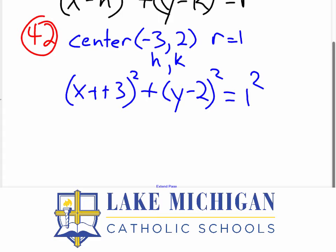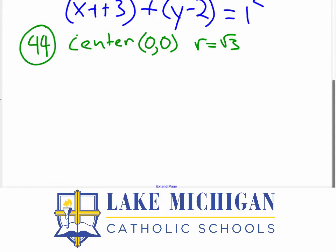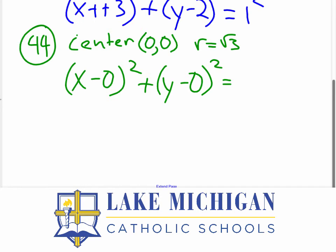And that's pretty much it. Now 44 is very similar to this. For 44, we're going to do the same thing, except they give us that the center is 0 comma 0 and the radius is the square root of 3. So again, what we want to do is say x minus 0 squared plus y minus 0 squared is equal to the square root of 3 squared.